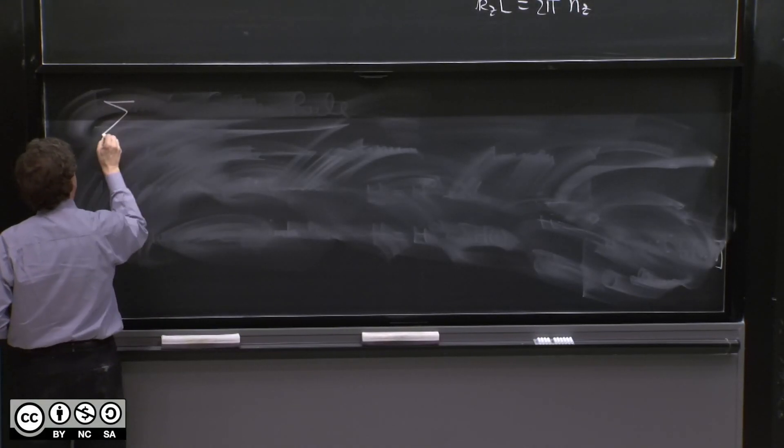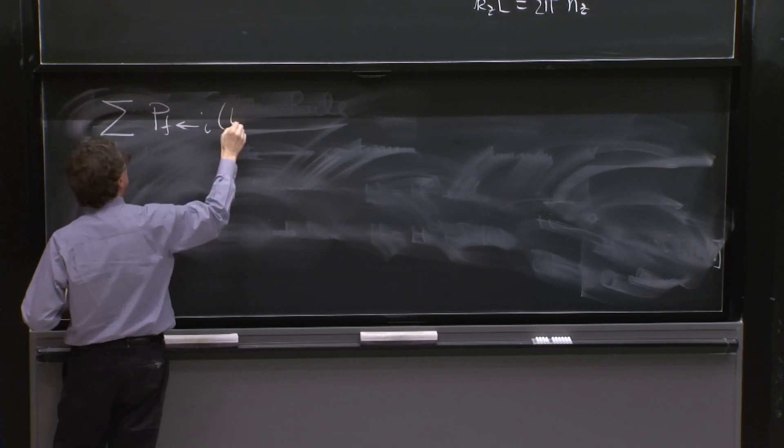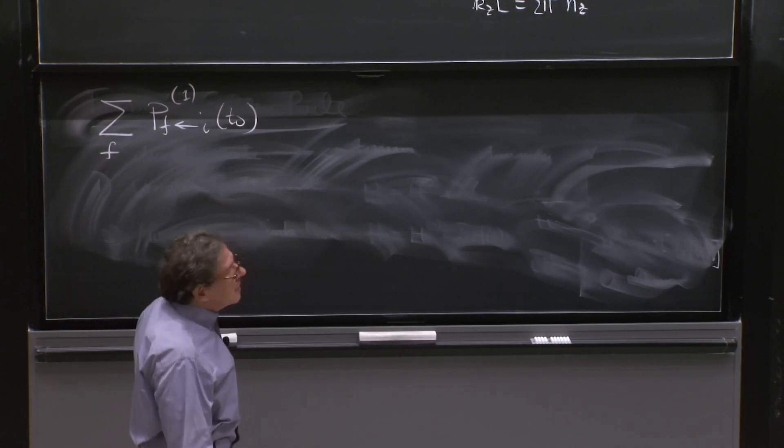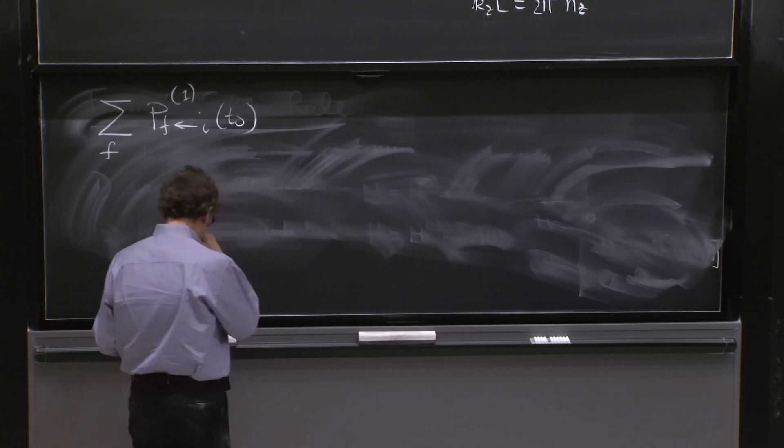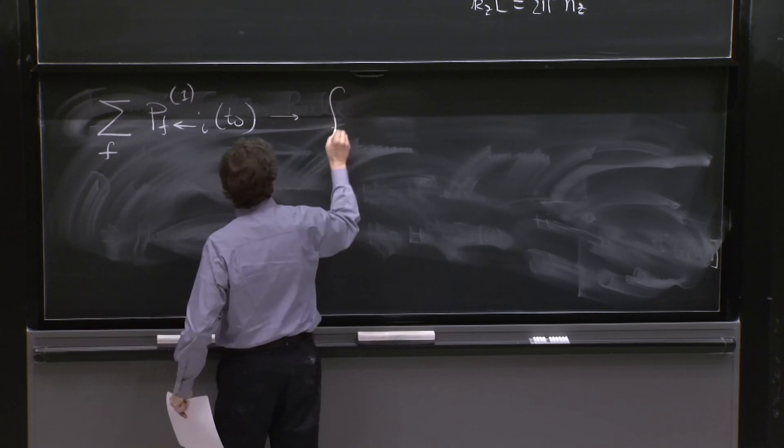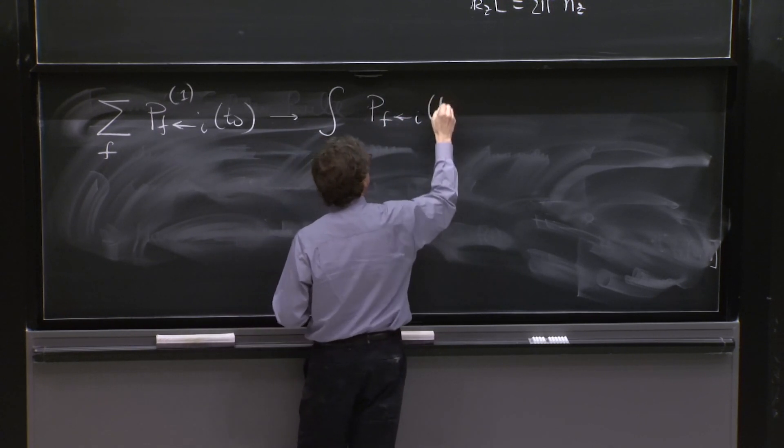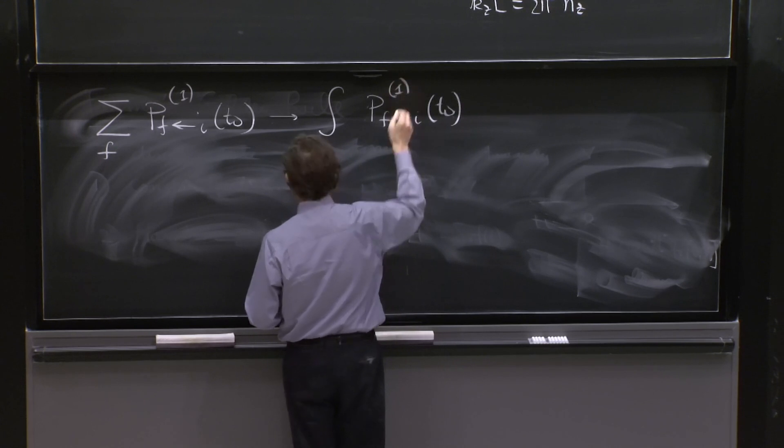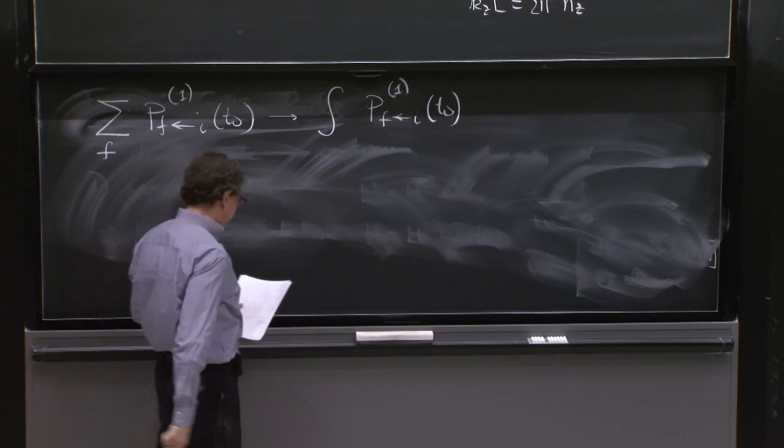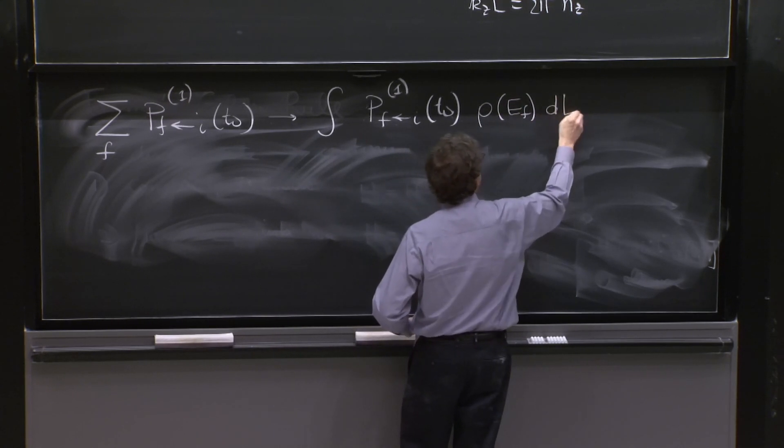So what do we do? We are going to sum over final states the probability to go from i to final at time t naught to first order. Since this sum over final states is really a continuum, this is represented by the integral of the f i t naught 1 multiplied by the number of states at every little interval. So this will go rho of EF dEF.